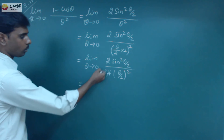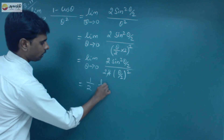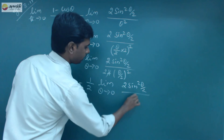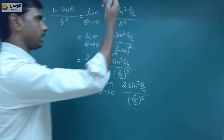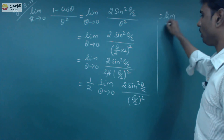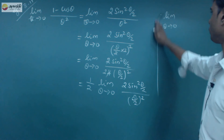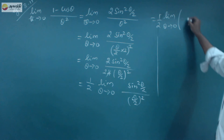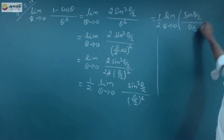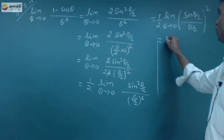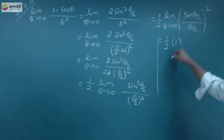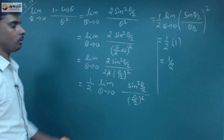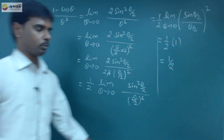So that equals 1 by 2 as a constant. So that's equal to 1 by 2 times limit theta tends to 0 of sin(theta by 2) divided by (theta by 2), whole squared. We know that value equals 1, so the answer is 1 by 2. If you substitute 0 directly into theta squared it is meaningless, but using this formula we simplify and find the answer is 1 by 2.